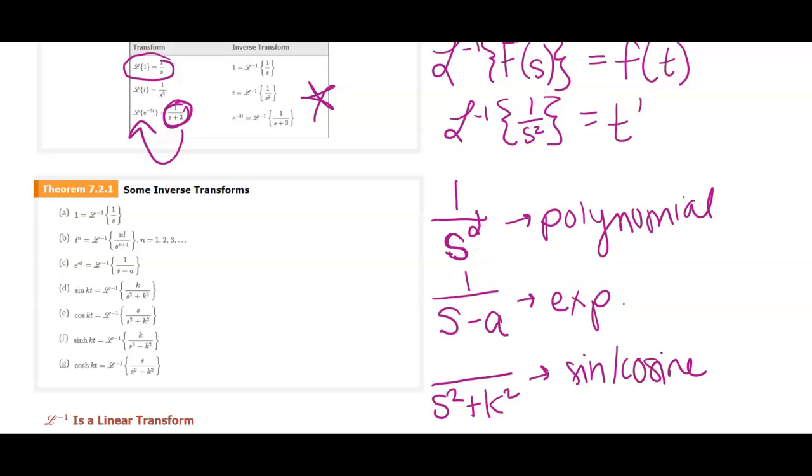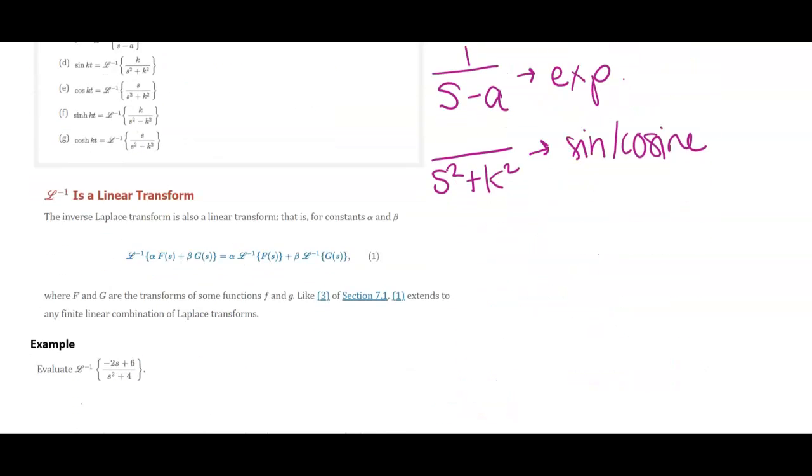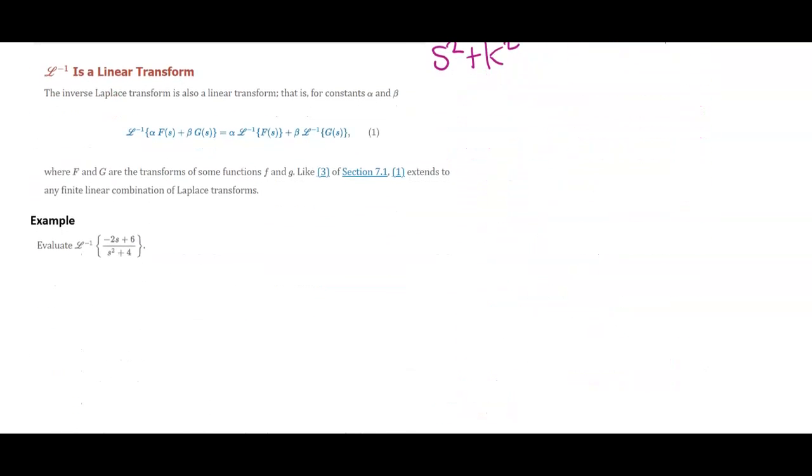So those are kind of the ways in which I remember how to get from our S functions and do an inverse Laplace transform to get it back to our original F of T. And the inverse Laplace is a linear transformation. So if you have numbers in the front or you're adding or subtracting pieces, you can just separate those all out.